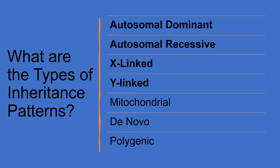These terms we will be discussing today help us understand if one or two pathogenic or likely pathogenic variants are needed to cause a condition or syndrome, and whether the gene is on the X chromosome or Y chromosome.